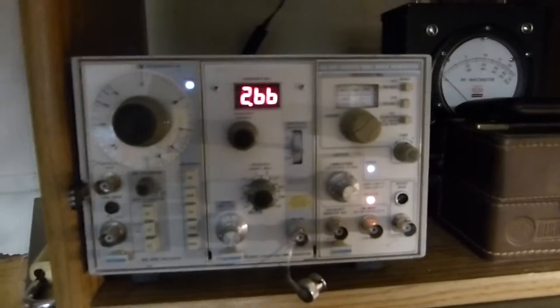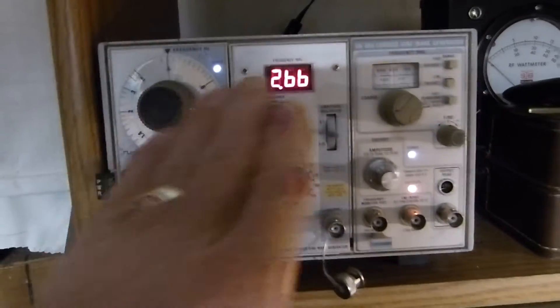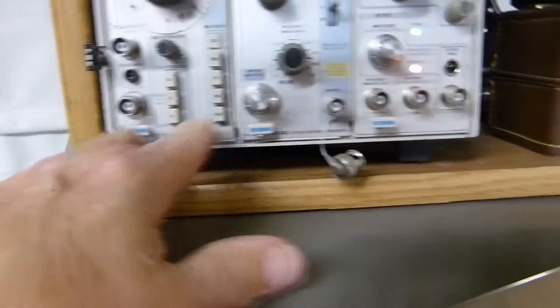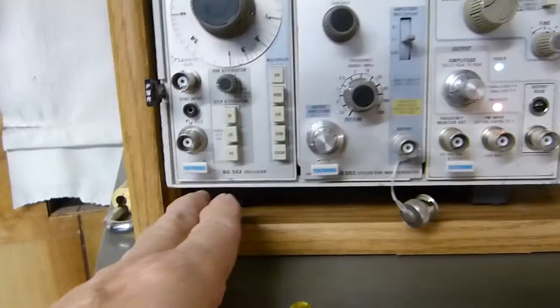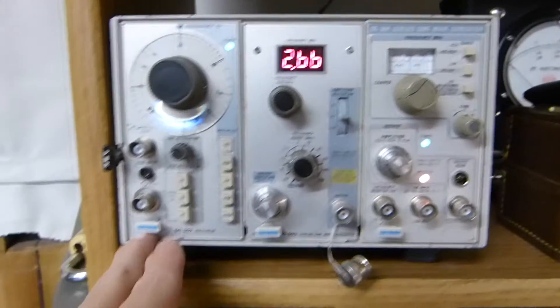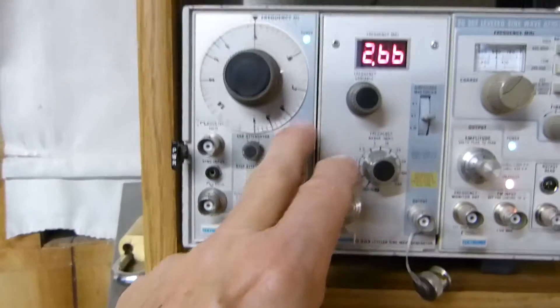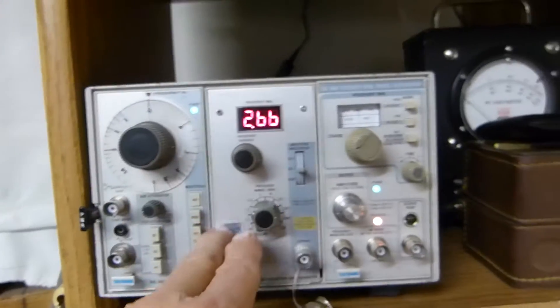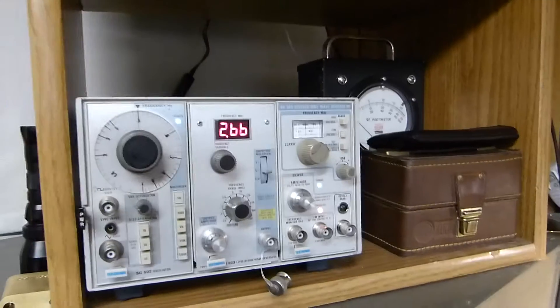I have another one right over here. This is a TM 503 because it's got three bays. These are SG 502, SG 503, and SG 504 signal generators. What this gives me is these three oscillators let me go from about 5 Hertz to over one gigahertz. They're absolutely beautiful.